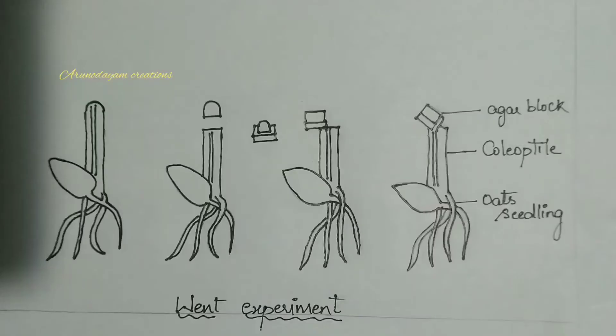Hello everyone, welcome back to Arunodayam Creations. Today we are going to learn about the F.W. Went experiment. In our previous video, we learned about Charles Darwin and his son Francis Darwin's experiment on phototropism.